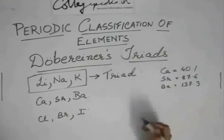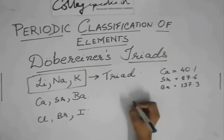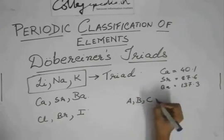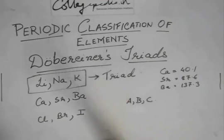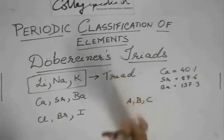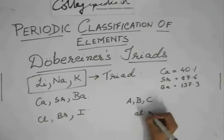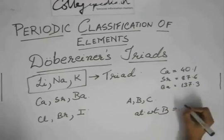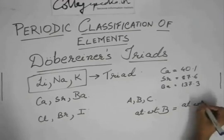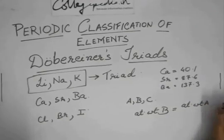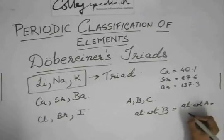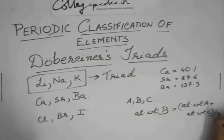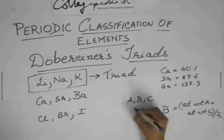So Dobereiner's formula was that if A, B, and C are belonging to a Dobereiner's triad, then atomic weight of B will be equal to atomic weight of A plus atomic weight of C divided by 2. So this was his formula.